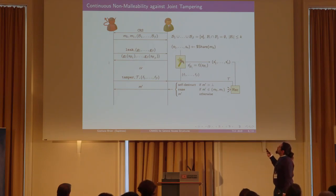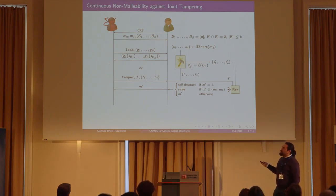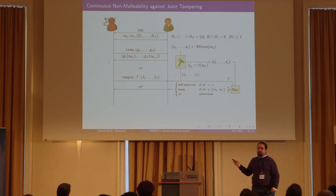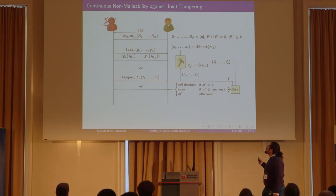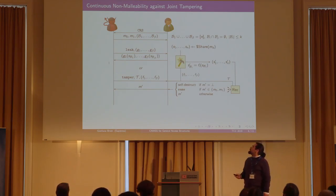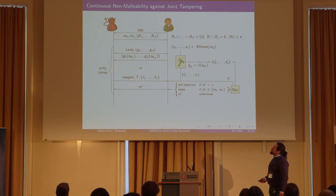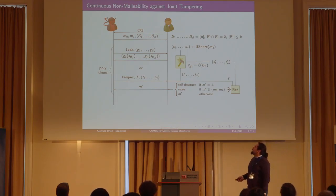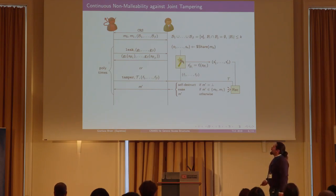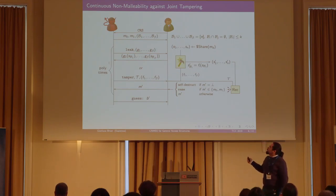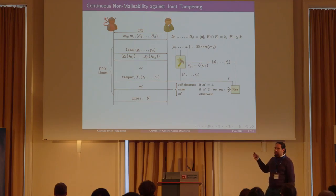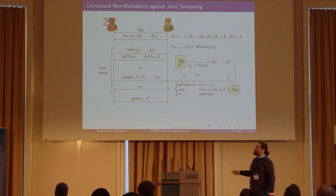In the second case, the reconstructed message could be either M0 or M1, and the challenger outputs the special symbol 'same' stating this condition without revealing which one, to avoid trivial attacks. Otherwise, the challenger simply outputs M'. The attacker is allowed to perform such queries a polynomial number of times, and finally outputs a guess bit B' trying to guess whether the secret sharing was of M0 or M1.